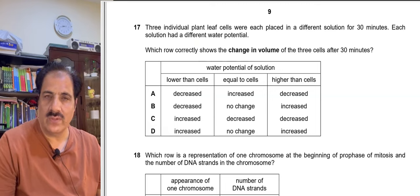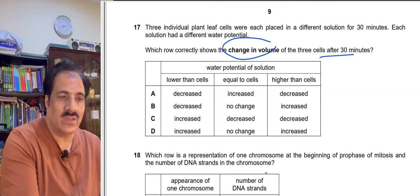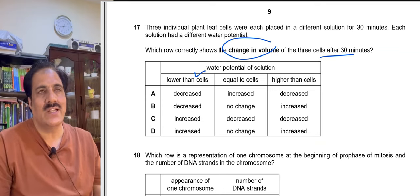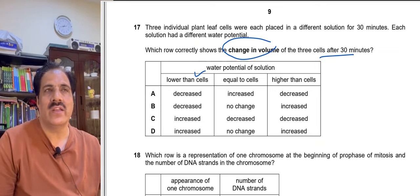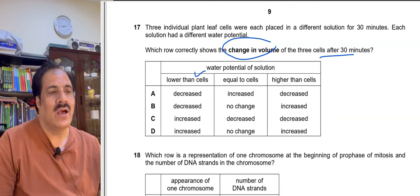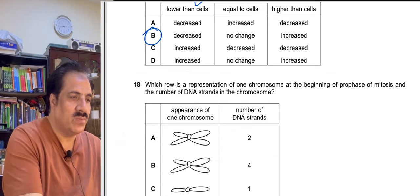Question 17: Three plant leaf cells were placed in solutions of different water potentials for 30 minutes. If solution water potential is lower than the cell, water leaves the cell and volume decreases. If water potential is equal, there is no net movement and volume remains the same. If solution water potential is higher than the cell, water enters the cell and volume increases. So the order is decrease, no change, increase — option B is correct.